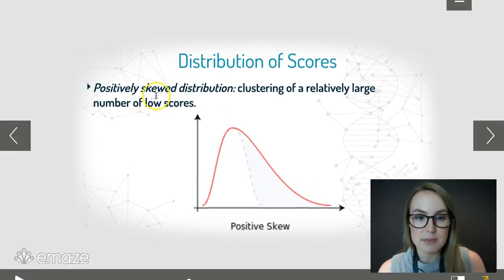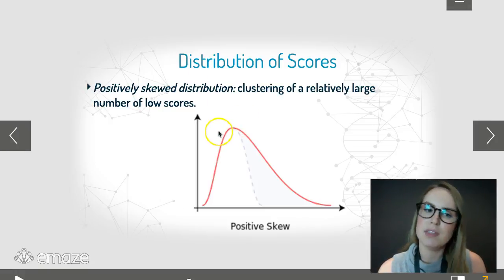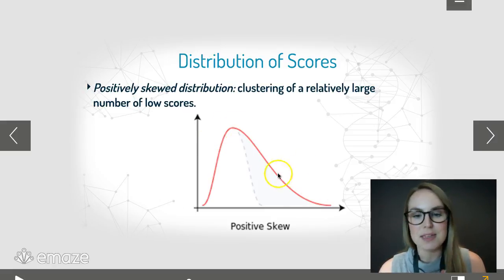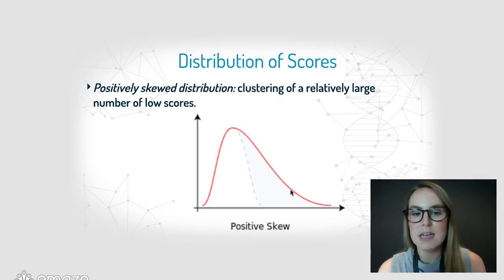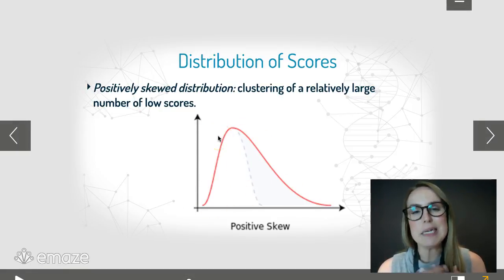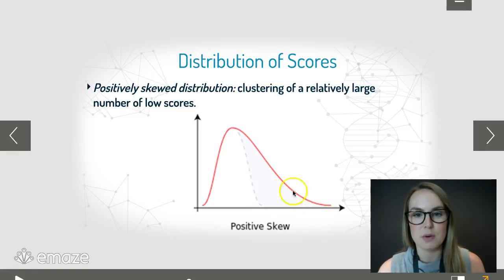A positively skewed distribution might seem counterintuitive because the peak appears to go to the left, but we look at the tail — so this is positively skewed. This is where you have a large number of low scores. In a class, a lot of students maybe didn't do very well and got quite poor scores, with very few getting good scores.